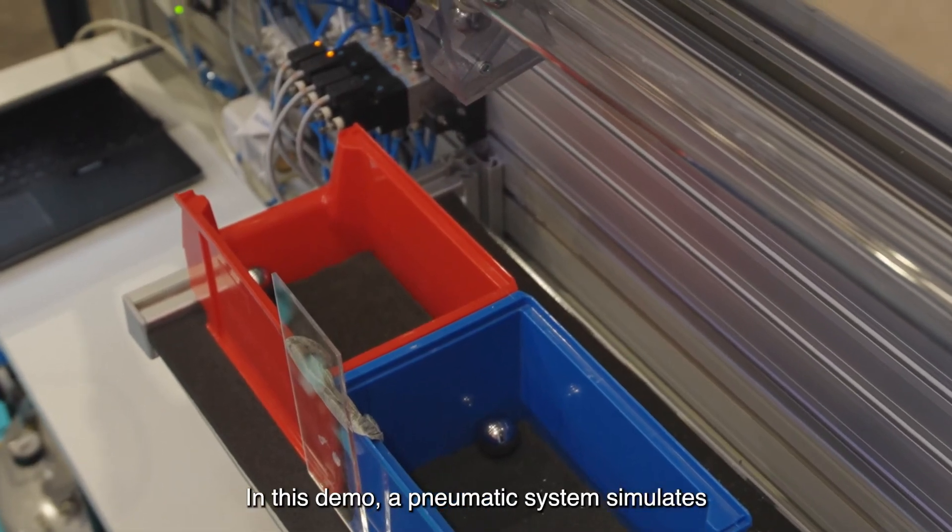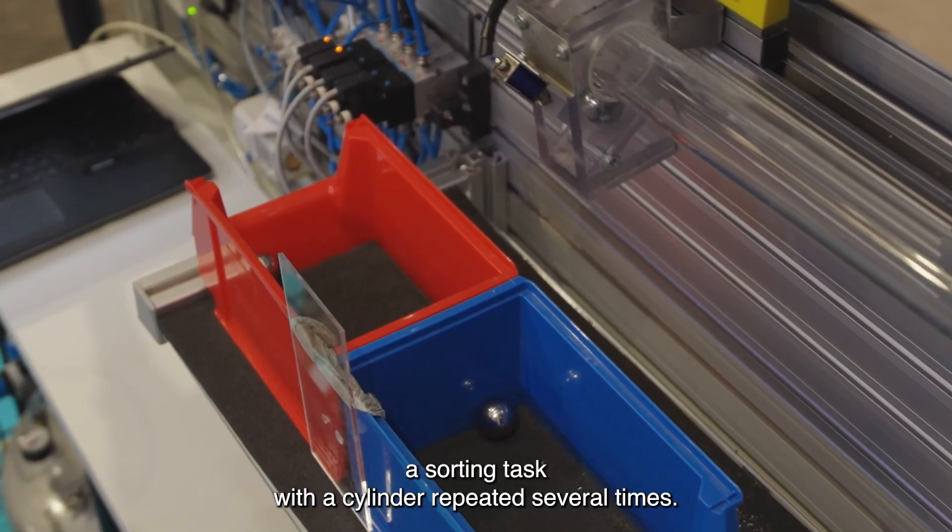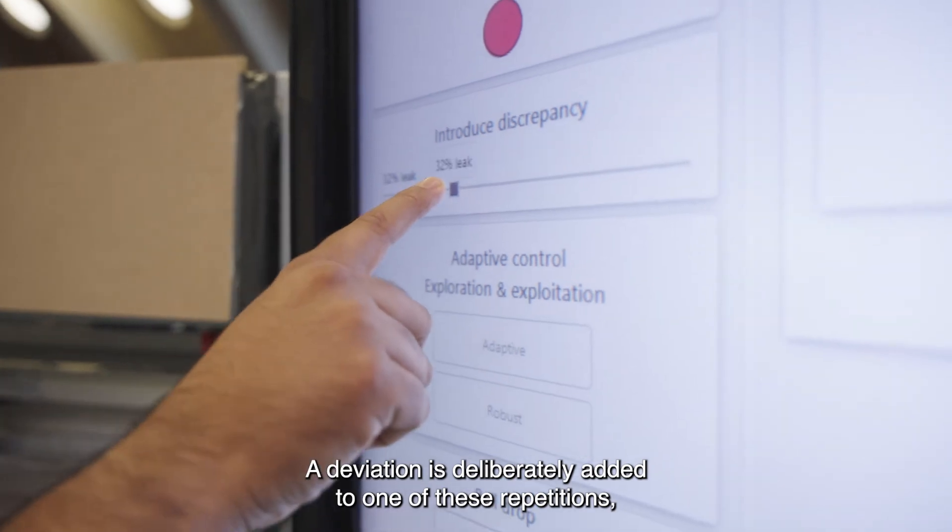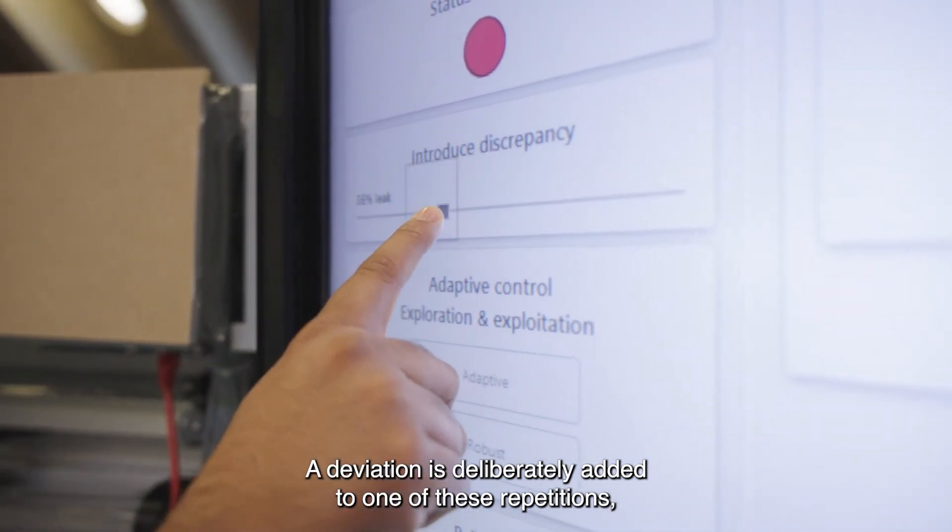In this demo, a pneumatic system simulates a sorting task with a cylinder, repeated several times. A deviation is deliberately added to one of these repetitions, but the system continuously monitors performance and immediately recognizes the change.